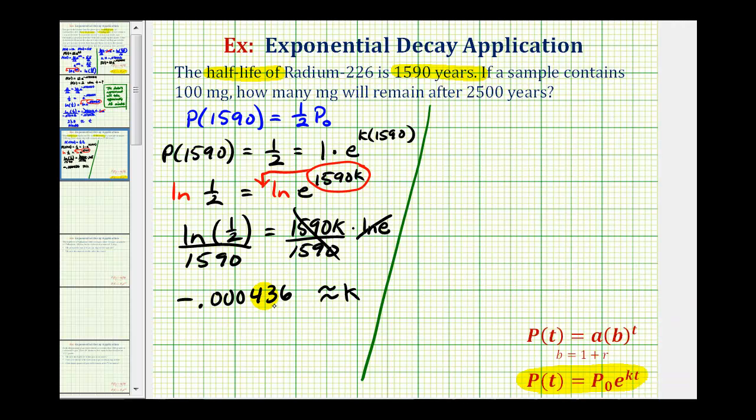Which means we can model this exponential decay using the exponential function P(t) equals P₀ times e raised to the power of -0.000436 times t.